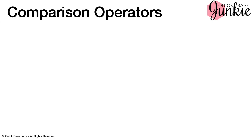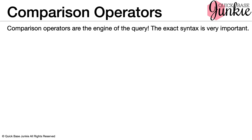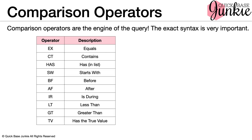Let's take a deeper look at those comparison operators. Comparison operators are the engine of the query and the syntax is very important. Here's a list of basic operators for equals, contains, has, starts with, before, after, etc. As you can see, those operators are either single or triple digits with capital letters. This syntax is very important.